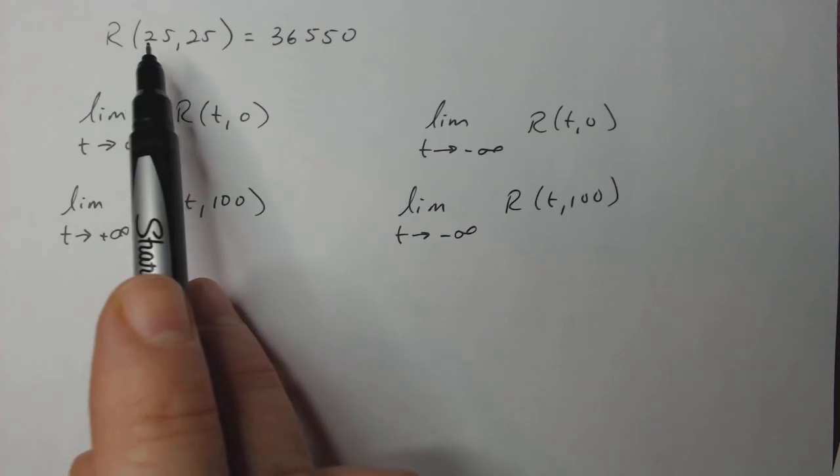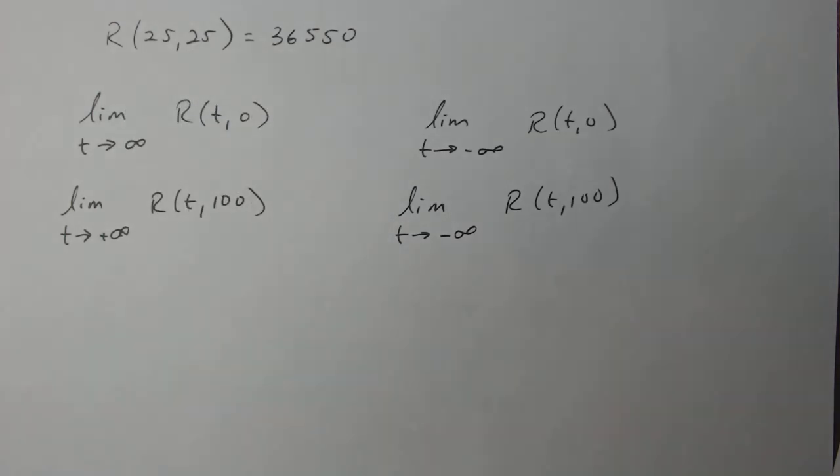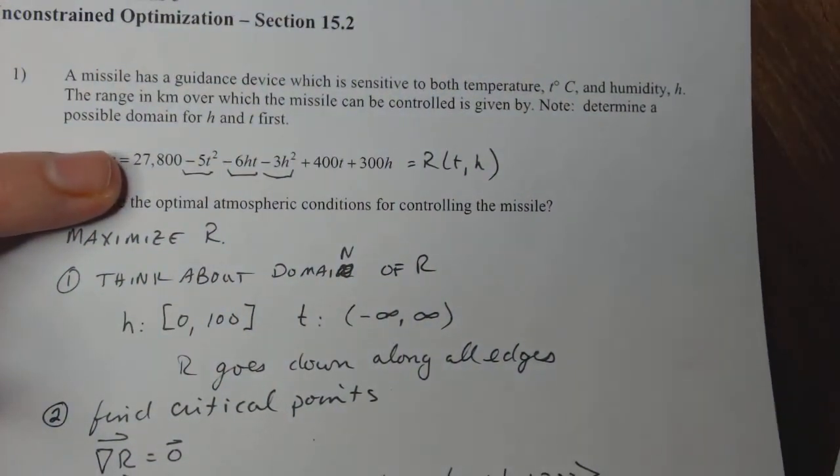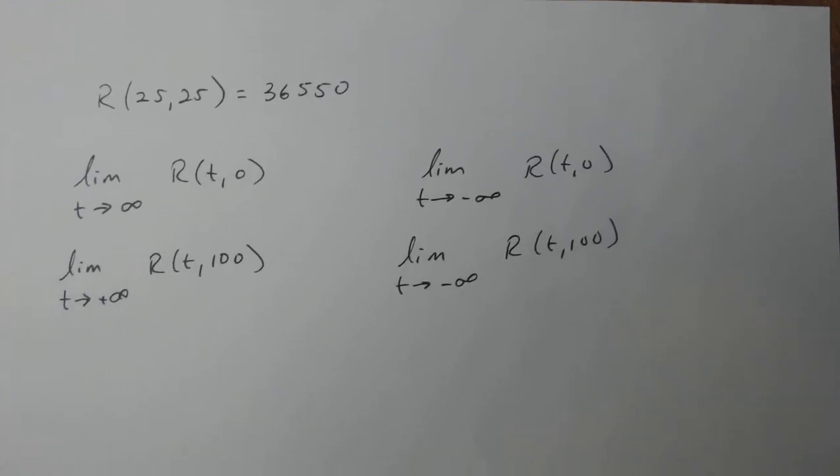I didn't show this on video, but I just took 25 and 25 and plugged it into the original function that we were given for range. It's right there. So I plugged in 25, 25 and got the number 36,550. You can do that yourself, stick it in the function and check it.